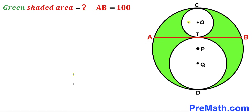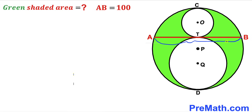Welcome to pre-math. In this video we have two white circles of different dimensions fully inscribed in a big circle, as shown in the diagram. The centers of these circles are O, P and Q respectively, and the points C, T and D are points of tangency. AB is a chord of the big circle that passes through the point of tangency T, and the chord AB has a length of 100 units. Our task is to calculate the area of the green shaded region.